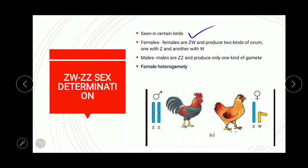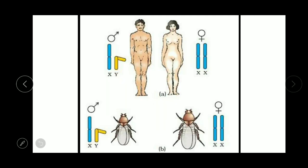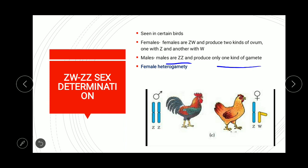The ZW type of sex determination is seen in birds. Here females are ZW and produce two kinds of ova: one with Z and one with W. Males are ZZ and produce only one kind of gamete. This is female heterogamety, in contrast to the XO and XY types where males are heterogametic. The sex of the bird depends upon the kind of ovum with which the sperm fuses.